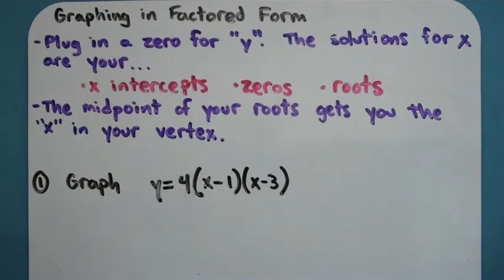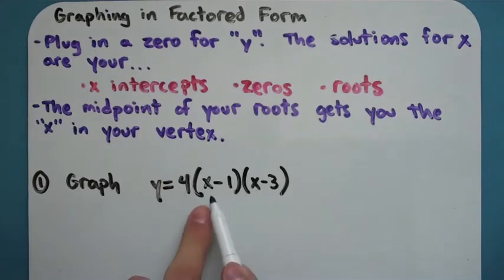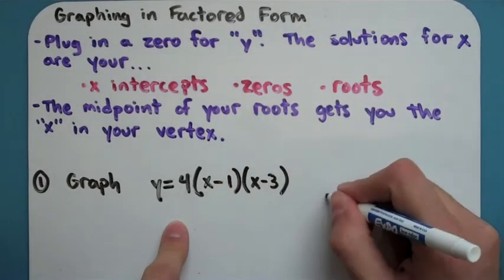So what I'm going to do right here is plug in, I'm going to look at these numbers right here and treat it like those problems I was doing in the last section with the zero product property. What numbers would make this equal zero? And it turns out that if I plug in a 1 for x, I'm going to get 4, I'll do it over here.